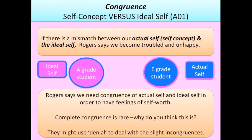If there is a mismatch between our actual self and our ideal self, Rogers says we become troubled and unhappy. For example, if your ideal self is that you're an A-grade student but your actual self is that you're an E-grade student, Rogers says that mismatch causes unhappiness and gives you doubts about self-worth. Rogers says we need congruence of actual self and ideal self in order to have positive feelings of self-worth. He did acknowledge that complete congruence is rare and that people might use denial to deal with slight incongruences.